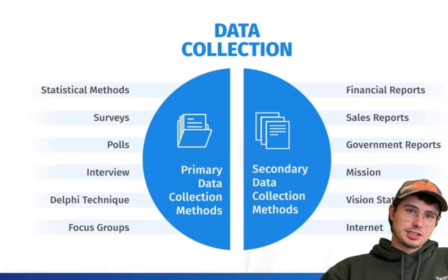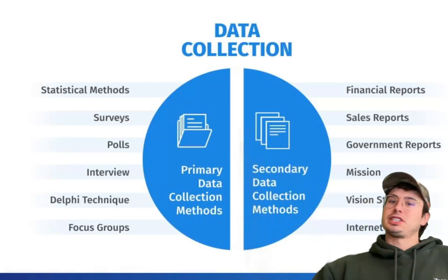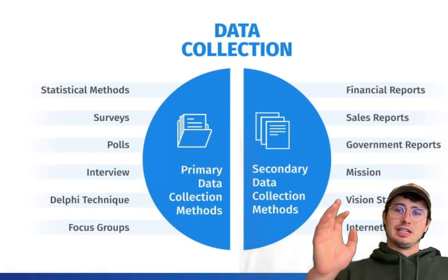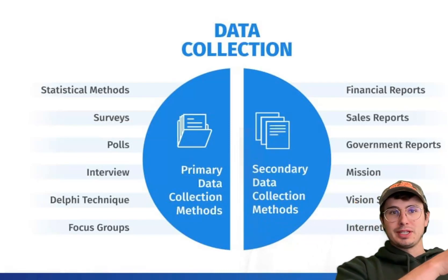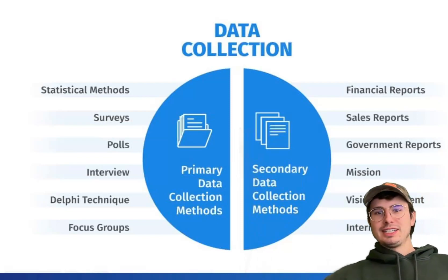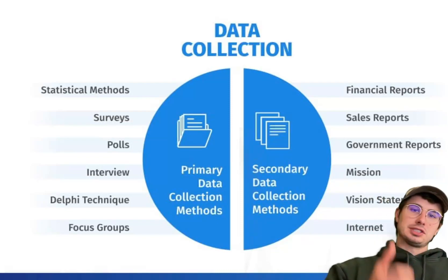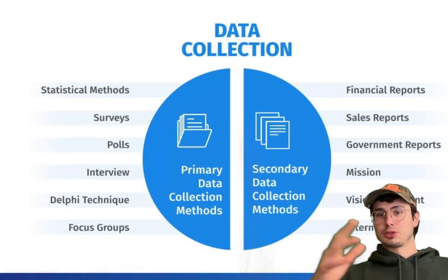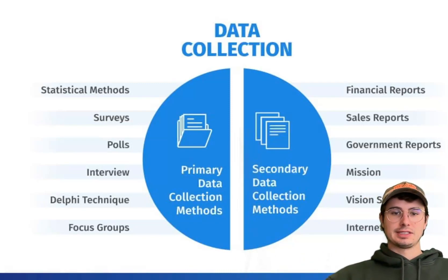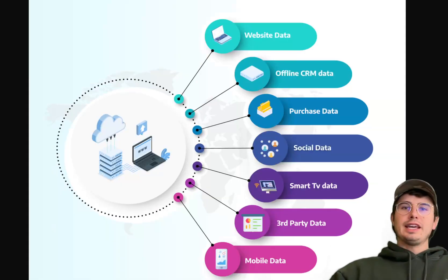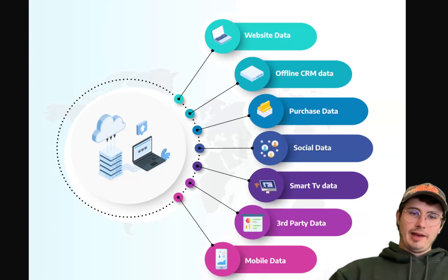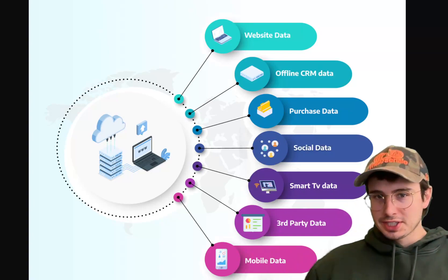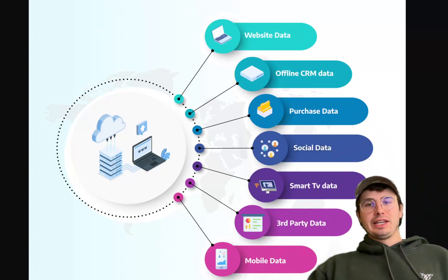Interviews, polls, surveys — this is the typical categorization of data, like whether it came from a primary source, just like you learned in grade school, or a secondary source written by someone else. However, in the actual data space, these sources are typically going to be internal systems like ERP or CRM software, external sources like social media platforms, APIs, public datasets, even things like Kaggle. Here's a list of the most common data used during the data collection stage.